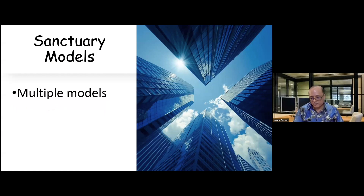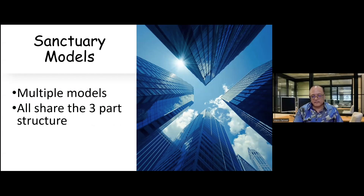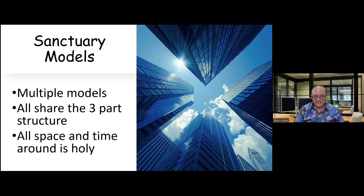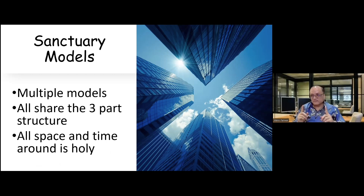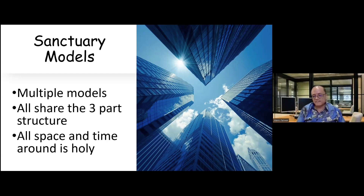So what have we seen? There are multiple models — three main ones — about the sanctuary, and all of them share the same three-part structure. There is something about the number three and the number seven that appear repeatedly in these structures. All space and time around the sanctuary is holy, and Israel was holy because they lived in a holy place. Even time in relationship to the sanctuary is holy. The presence of God makes both time and space holy, and the tabernacle was intended to show that everything God touches is holy — the people, the time, and all of it.